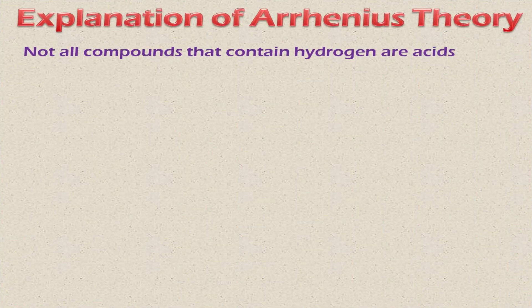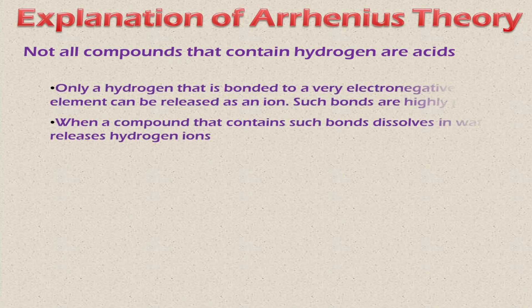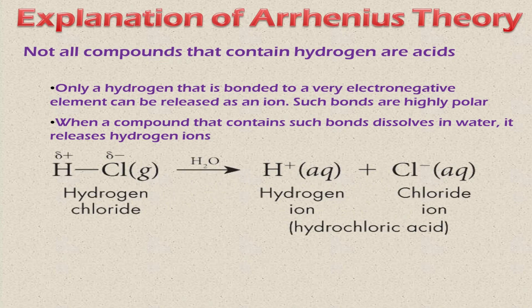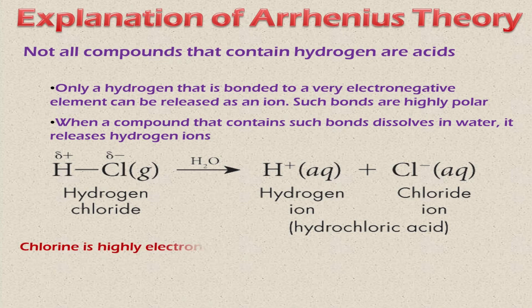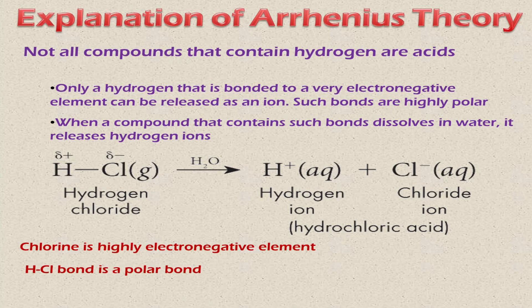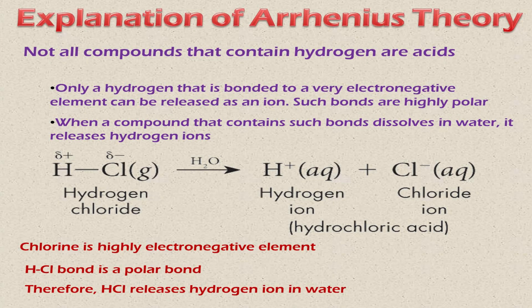Not all compounds that contain hydrogen are acids. Only a hydrogen bonded to a very electronegative element can be released as an ion — such bonds are highly polar covalent bonds. When a compound containing such bonds dissolves in water, it releases hydrogen ions. For example, in HCl, H is attached to chlorine, which is highly electronegative, so whenever it goes into water it gives a hydrogen ion. This HCl bond is a polar bond, and due to the electronegative element, hydrogen ion is released, so HCl is considered an acid.